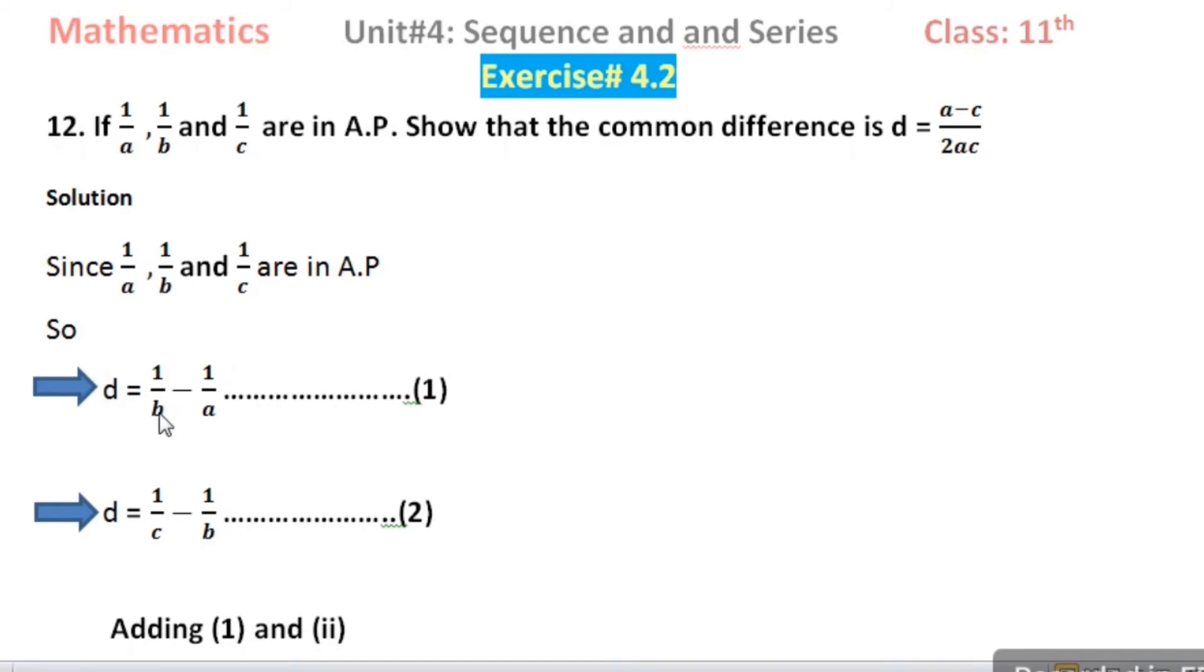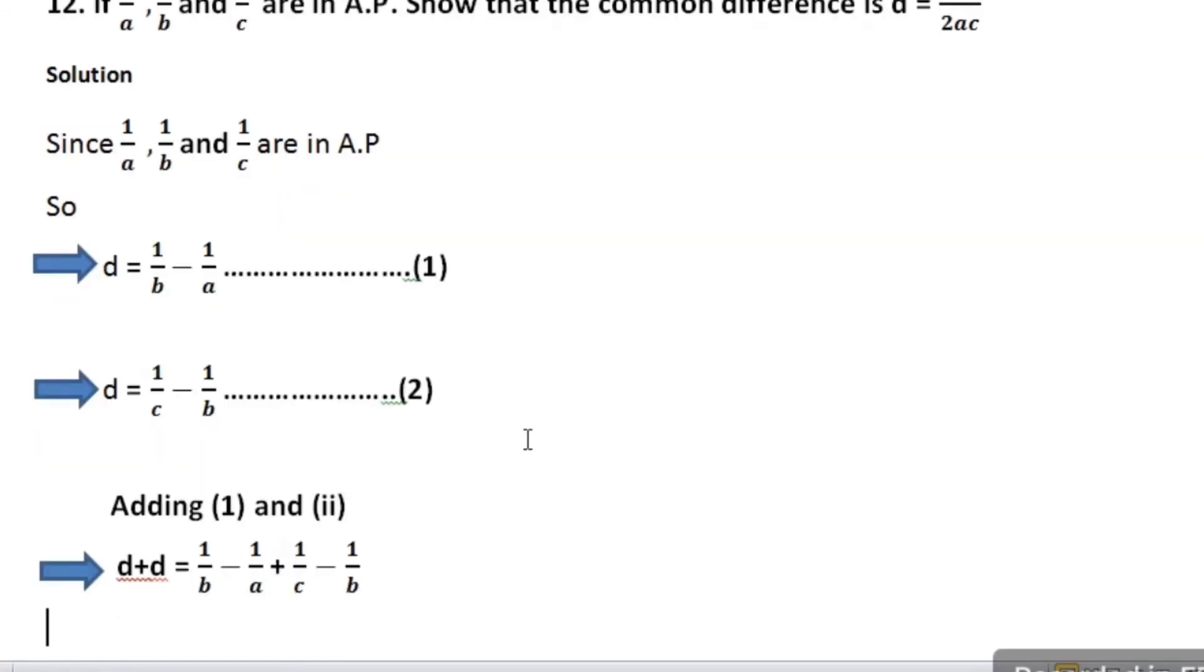So d is equal to 1 divided by b minus 1 divided by a. That is equation number 1.